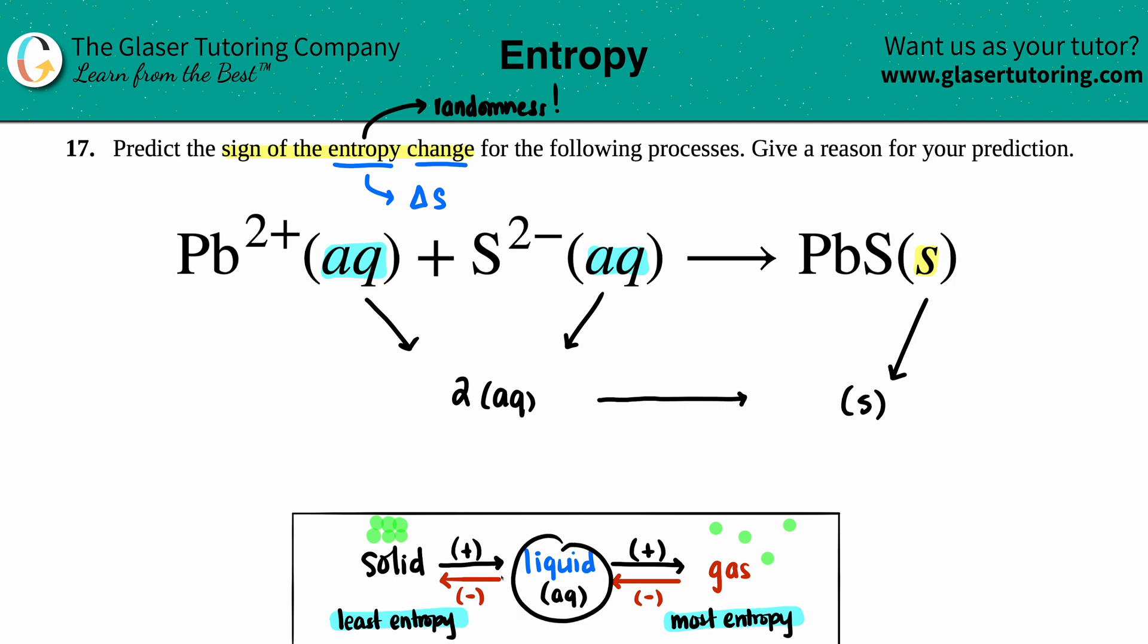In this case you're starting off with the liquid realm (aqueous) and you're going to something that is very structured - it's a solid. So since you're going from technically a liquid to a solid, my ΔS value, my entropy change, would have to be a negative value.